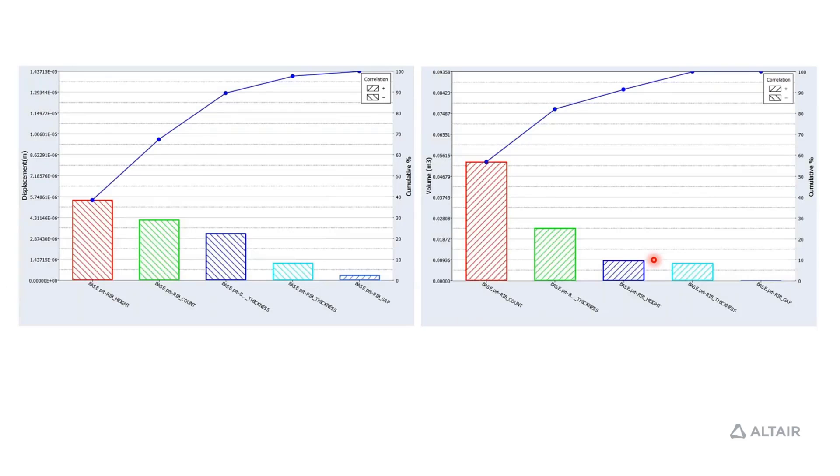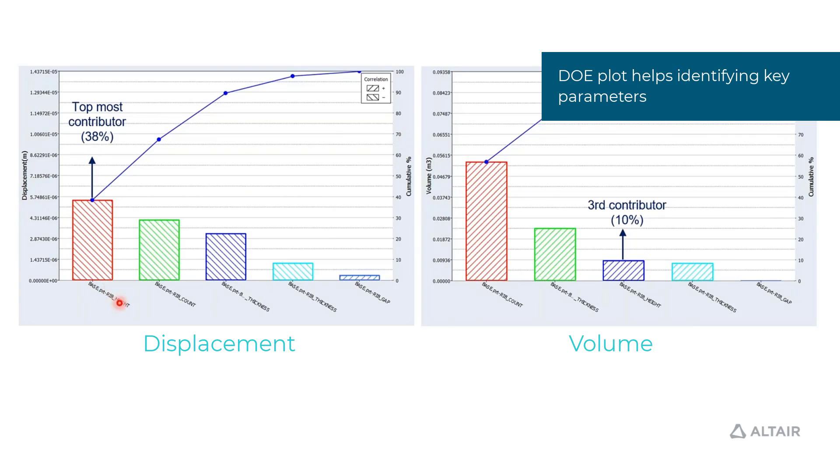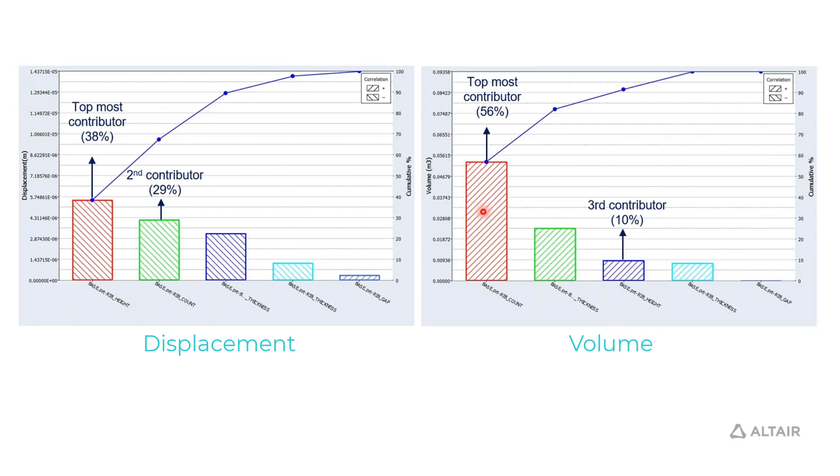Just to give an idea of the DOE that we did on this example. If you look at displacement and volume, the top contribution was coming from rib height, whereas it was not contributing a lot in terms of volume. The rib count has more importance on the volume. Similarly, pump wall thickness is not contributing a lot for displacement, although it's 22%, but it goes really low for the volume.